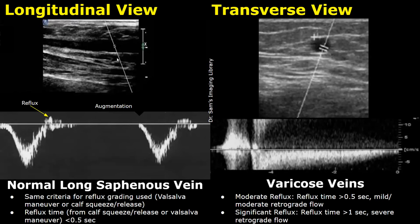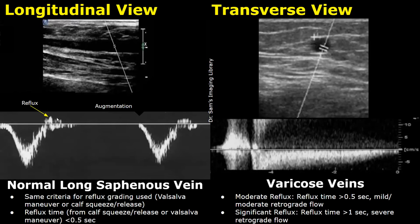In this image we can see a normal spectral waveform of the long saphenous vein. When the calf squeeze is released, there is a small amount of retrograde flow. This small amount of backward flow is normal, and this duration of backward flow can be calculated on the spectral waveform. In normal cases it should be less than 0.5 seconds — if it is less than 0.5 seconds, this is normal.